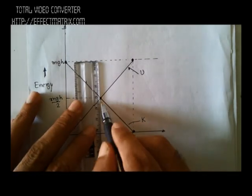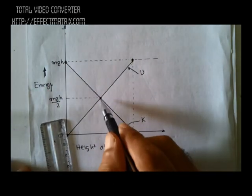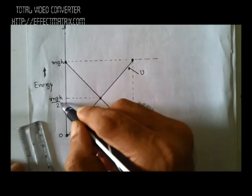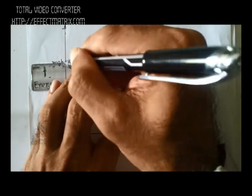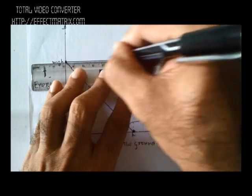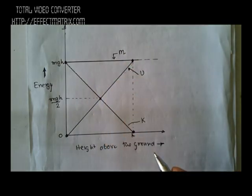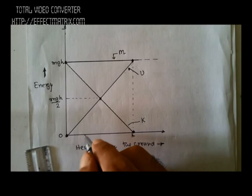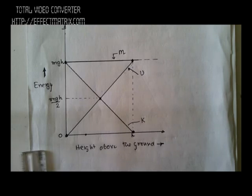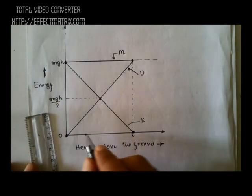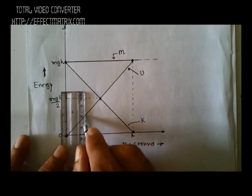At the intersection point, both kinetic and potential energy are mgh/2. The potential energy graph gives potential energy at any height, and the kinetic energy graph gives kinetic energy. The sum of kinetic and potential energy is always mgh, represented by a horizontal line — the total energy line. Let us consider a random height from the ground.